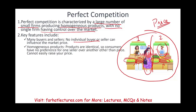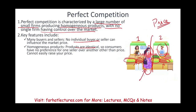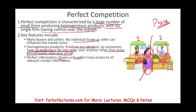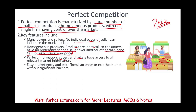Supply and demand will set the price. The products are homogeneous — identical — so the consumer has no preference for one seller over the other, other than the price, and the price cannot be easily raised. If one of these sellers raises the price, the customer will go to the other seller. There is perfect information — buyers and sellers have access to all the relevant market information, nothing hidden about the corn or the tomatoes. And there is easy market entry and easy exit.